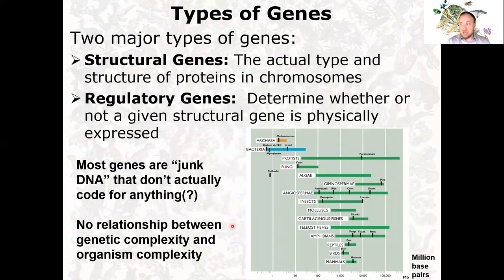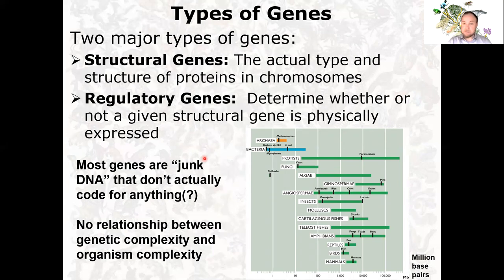There are two types of genes: structural genes, which determine the actual type and structure of chromosomes, and regulatory genes, which determine whether a structural gene is turned on or physically expressed. One interesting point: we often erroneously talk about primitive versus advanced organisms. All organisms are developed to be fitting to their environment — as primitive or as advanced as they need to be to do their job.